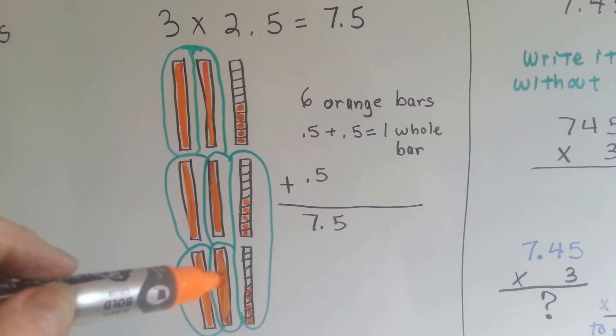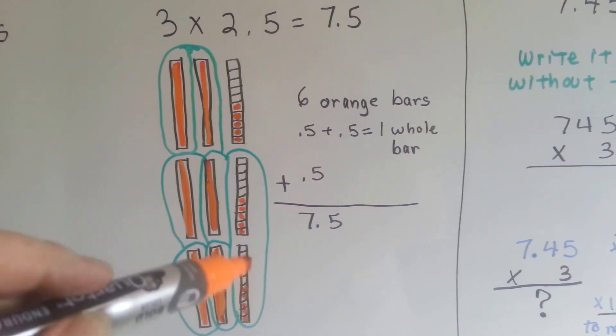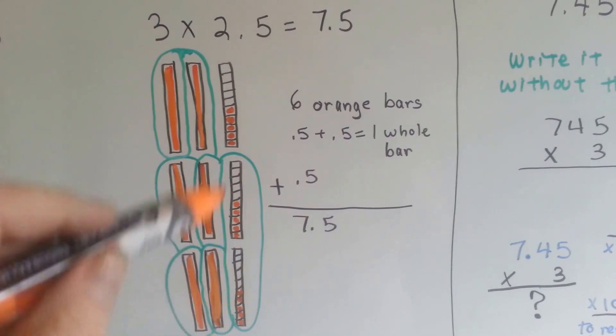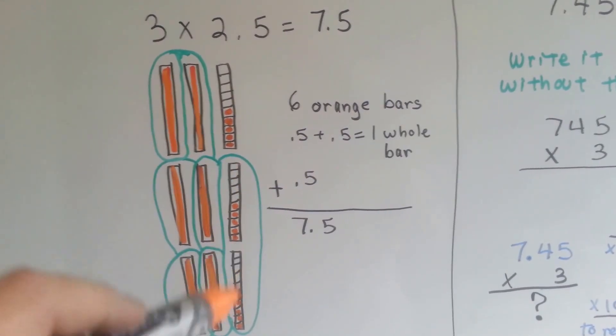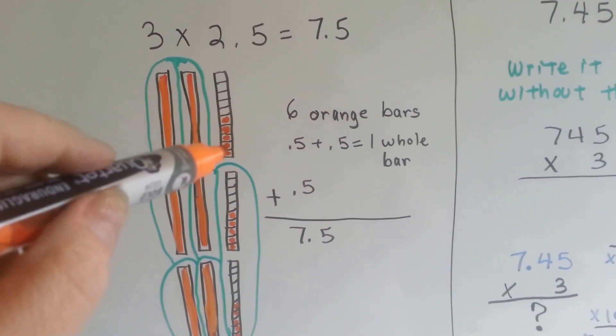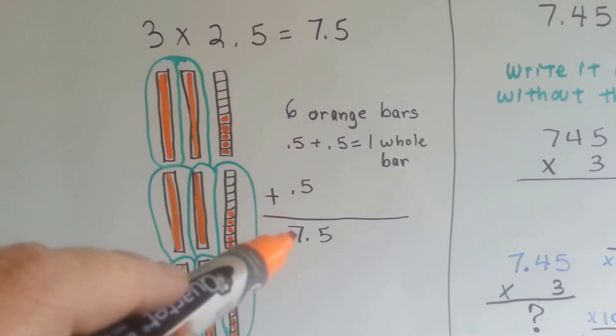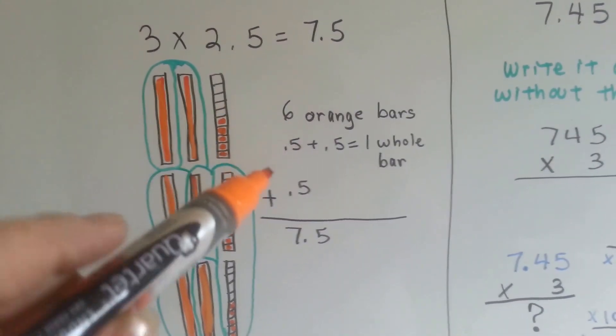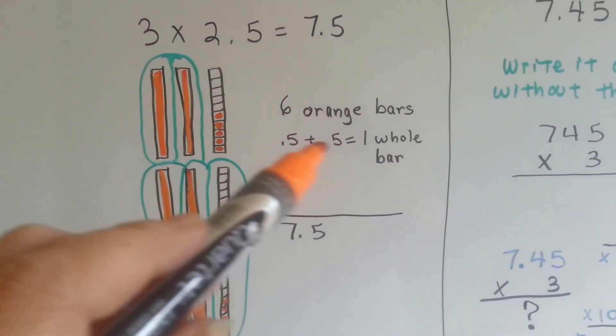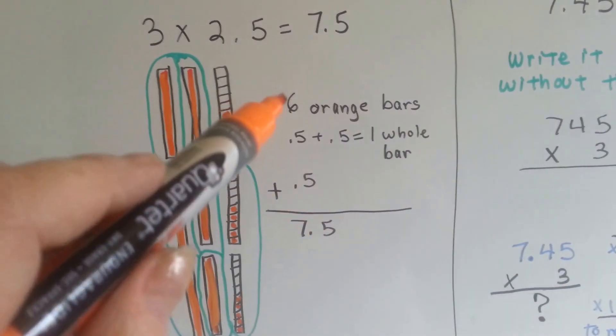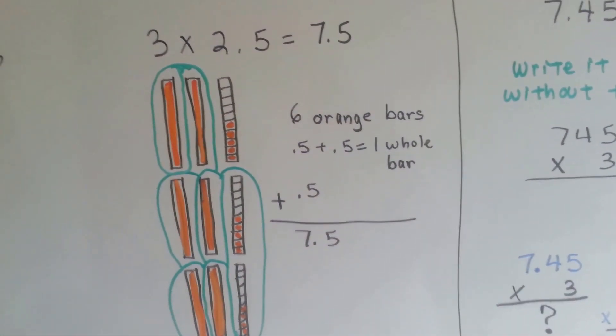We've got 1, 2, 3, 4, 5, 6, and then this 5 tenths and this 5 tenths counts as one whole one, because all the orange boxes would be filled in on one of them, so that would be 7, and then we have 5 tenths in the last one, so we would have 7 and 5 tenths. 6 whole orange bars, 2 with 5 tenths in them makes one whole bar, and then the last 5 tenths makes 7 and 5 tenths.